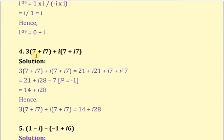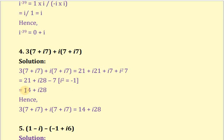The next example is 3 into 7 plus 7i plus i into 7 plus 7i. We open the brackets: from the first bracket we get 21 plus 21i, and from the second bracket we get 7i plus 7i squared. Since i squared equals minus 1, we get 21 plus 21i plus 7i plus 7 times minus 1. Combining: 21 minus 7 gives 14, and 21i plus 7i gives 28i. So the answer is 14 plus 28i.